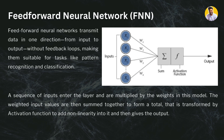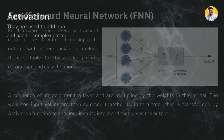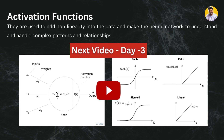Feed forward neural networks are good for tasks like pattern recognition and classification. When you enter input data, it gets multiplied by the model's weights, the weighted inputs are summed together to form a total, and that total is transformed by an activation function to add non-linearity, giving us the output. We'll cover activation functions in our next video.